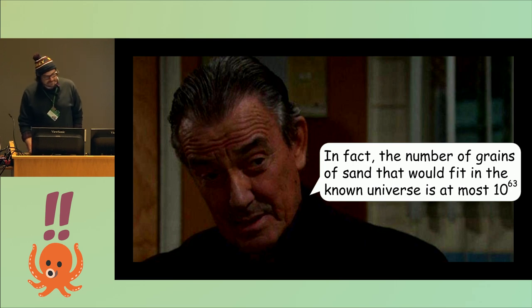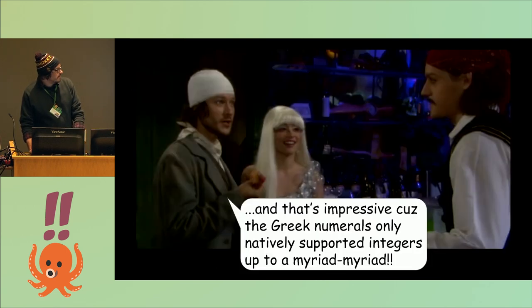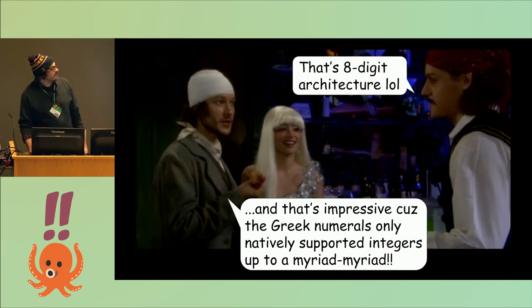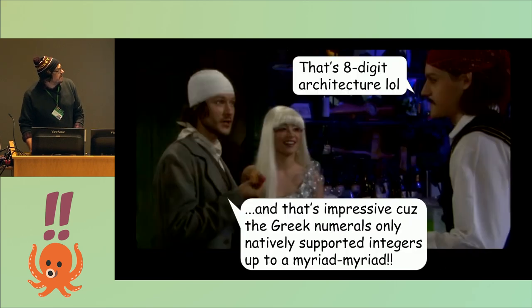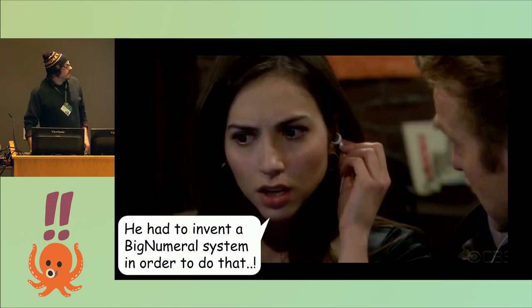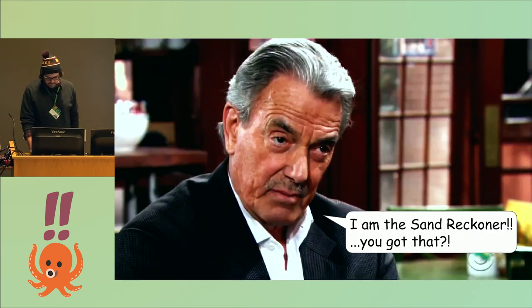What's interesting about this is that the Greek numeral system had a myriad, which was ten to the fourth, and they could go up to a myriad myriad. That's kind of as high as it would go, so eight-digit architecture. Ten to the sixty-three is well beyond that, so he had to invent big numerals. And he published his results in a paper he called the Sand Reckoner.